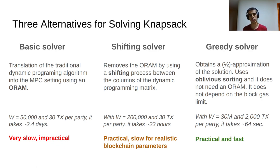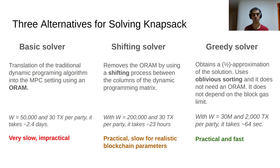The second solution is a shifting solver, which removes the oblivious RAM of the previous solver by using a shifting process between the columns of the dynamic programming matrix. With a maximum capacity of 200,000 and 30 transactions per party, the protocol finishes in around 23 hours, which is more practical than the previous solution but still slow for realistic blockchain parameters.